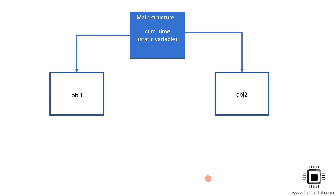We'll make some changes here. We'll make it a static variable — that means a single copy variable which is generic to all the objects of this main structure. Because that makes sense: the current_time variable can't be a private variable of each object because it tracks time, and time is the same for all objects of this main structure.